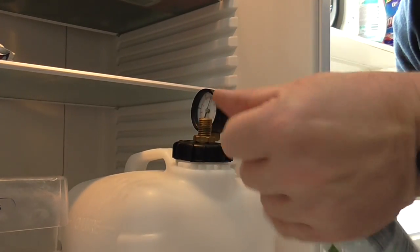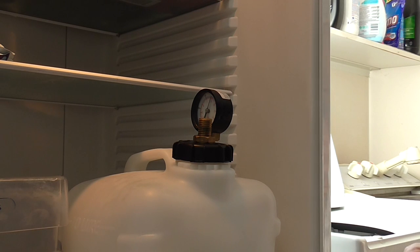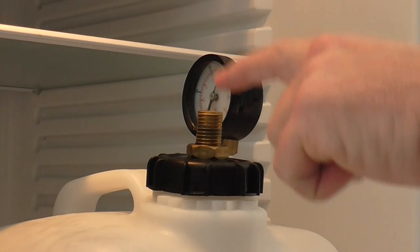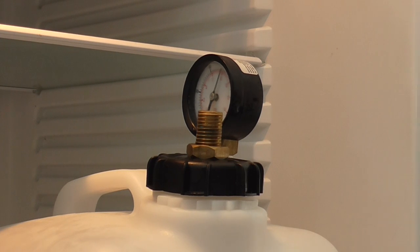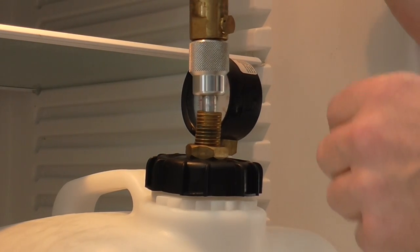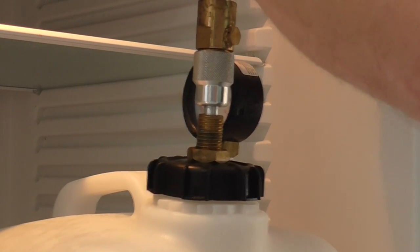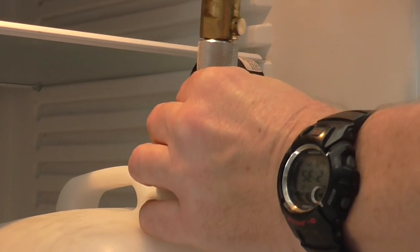So it just screws on the top there, and then all I do is try and get a bit closer. We've got the s30 inlet valve here, and you just basically push down on the cylinder.